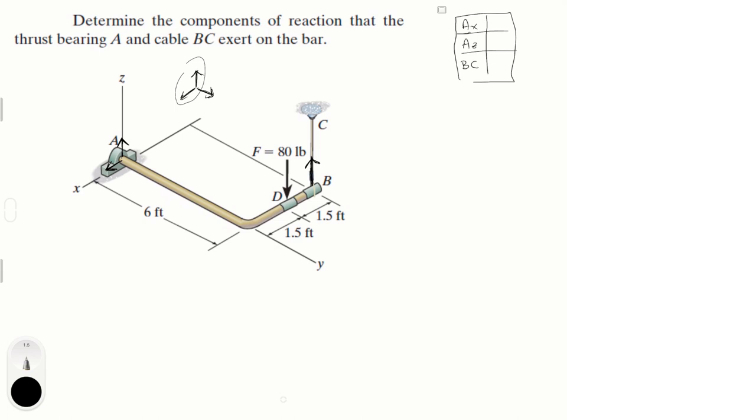Now first, you know that the sum of the forces in the Z is equal to zero, right? Seems to be the most obvious one since there's a lot of forces going up or down. So Az minus the 80 pound force being applied plus BC is all equal to zero. So let's say Az plus BC is equal to 80. Call this equation one.